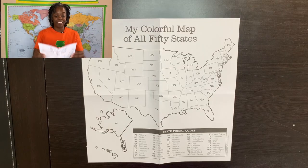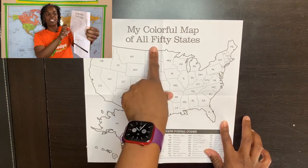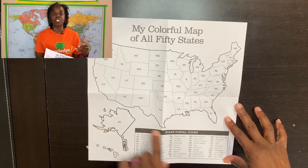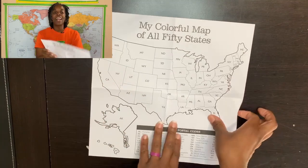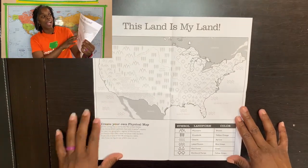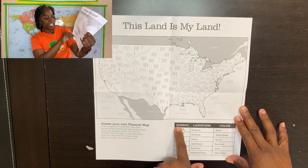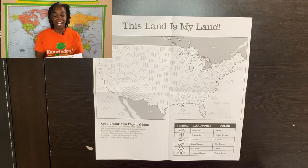Another thing I found at Dollar Tree is a state map called 'My Colorful Map of All 50 States.' There's an option to color the map, and I thought these are a little bigger than the ones in the curriculum. As a bonus, on the back it has 'This Land is My Land' with different symbols and landforms in colors they can use to create their own physical map of the United States. These came in a pack of six, and I accidentally bought three packs, so I have 18 — plenty of maps to color.